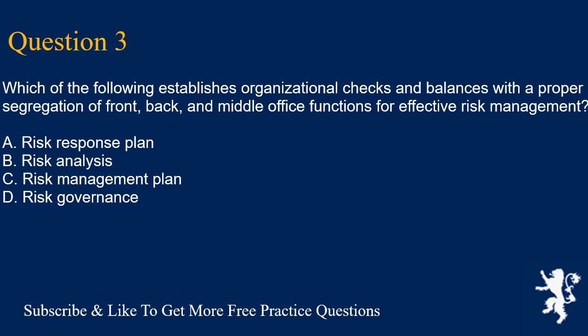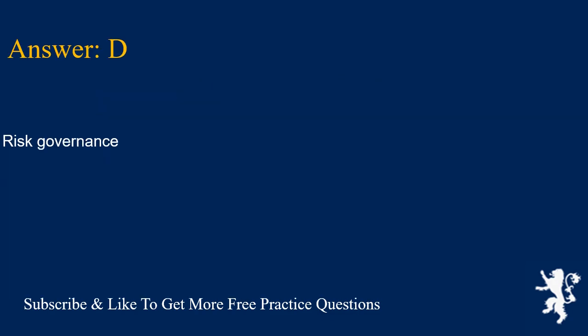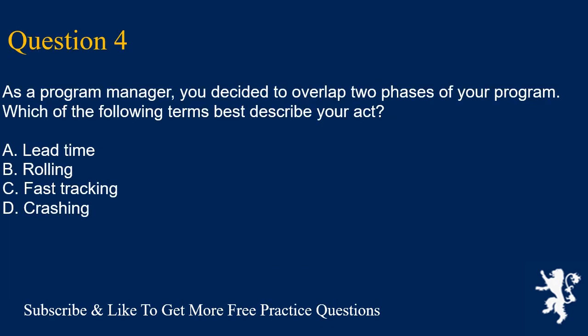Question 3: Which of the following establishes organizational checks and balances with a proper segregation of front, back, and middle office functions for effective risk management? A. Risk response plan. B. Risk analysis. C. Risk management plan. D. Risk governance. Answer is D. Risk governance.